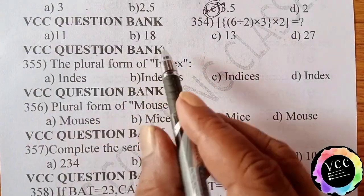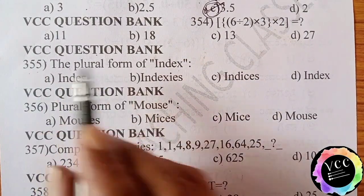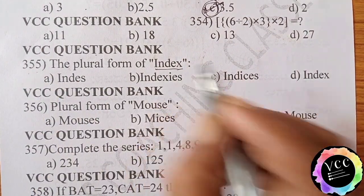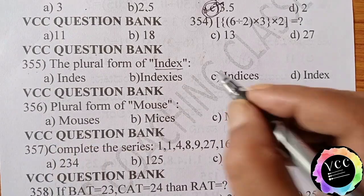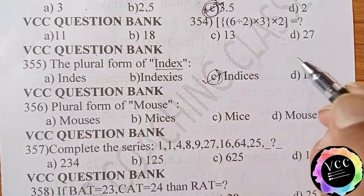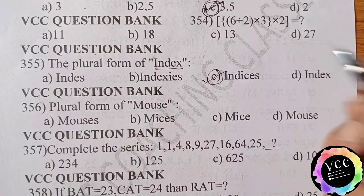VCC question bank 355. The plural form of index, its answer is indices. C option is the right answer.